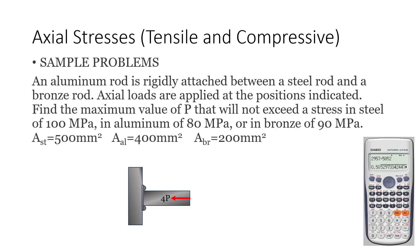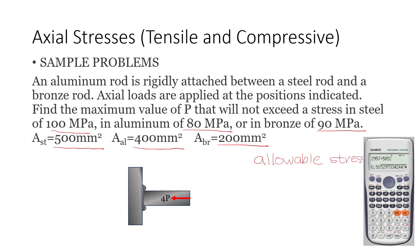In our problem, we have to find the maximum value of P that will not exceed a stress in steel of 100 MPa, in aluminum of 80 MPa, or in bronze of 90 MPa. These stresses are called the allowable stresses. What this means is that if our member will be subjected to a stress higher than these values, then it will have a tendency to fail. Our cross-sectional areas are also given: 500 mm² for steel, 400 mm² for aluminum, and 200 mm² for bronze.